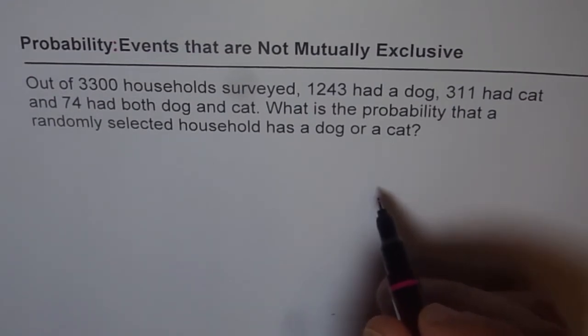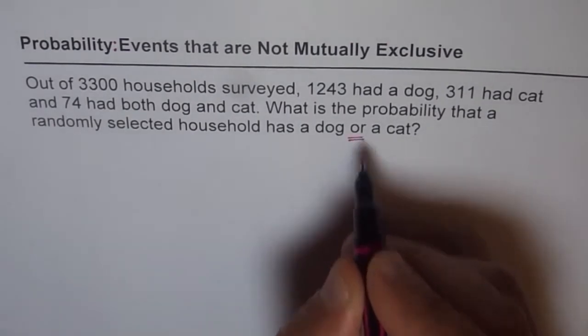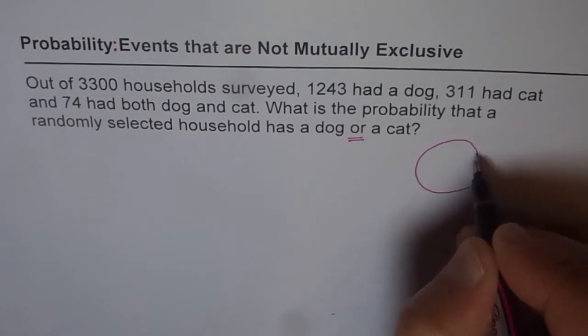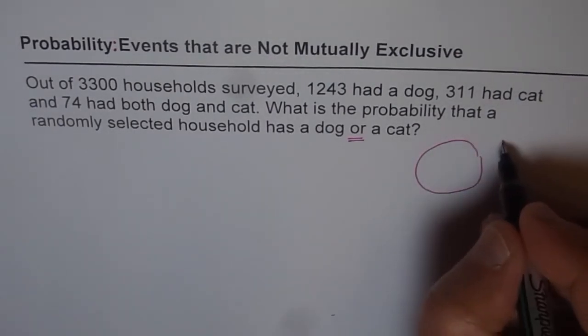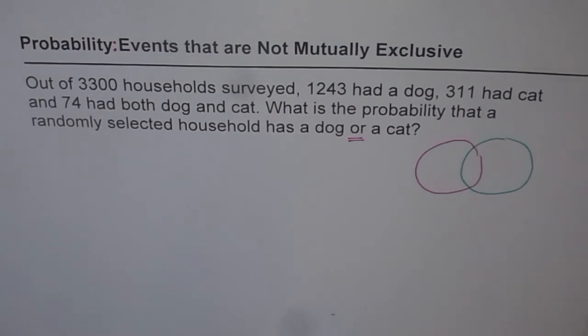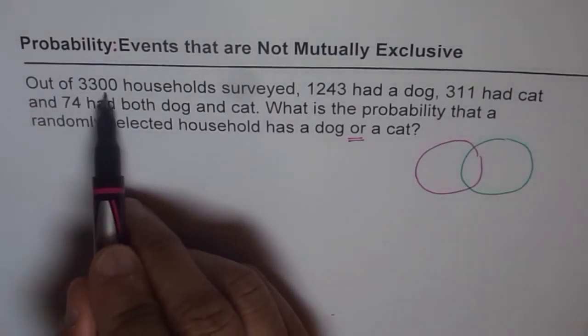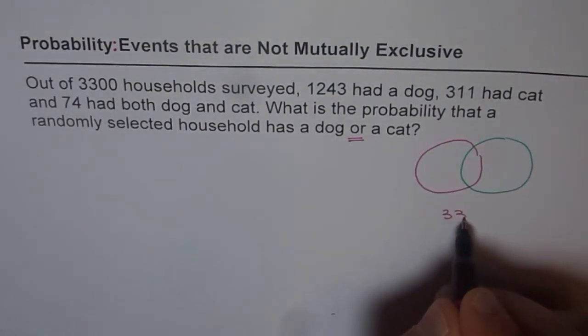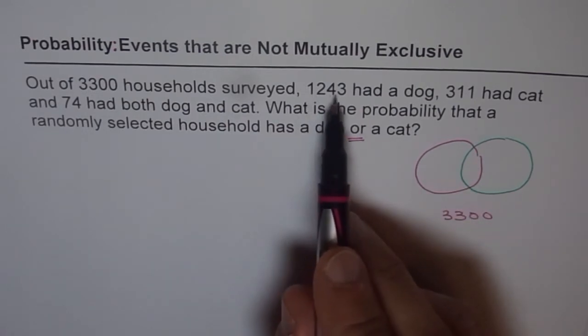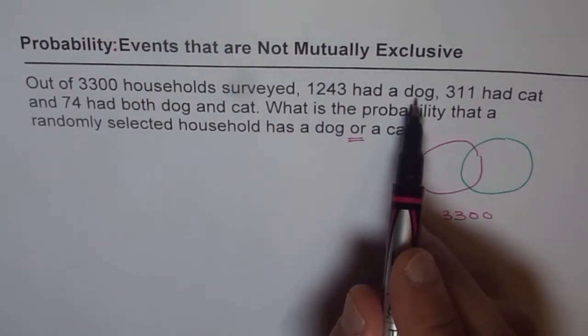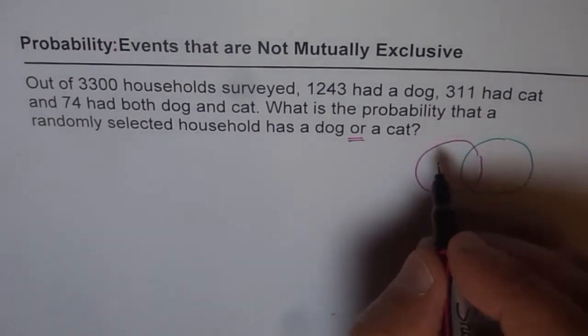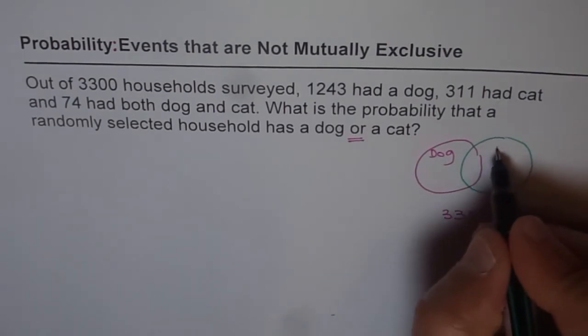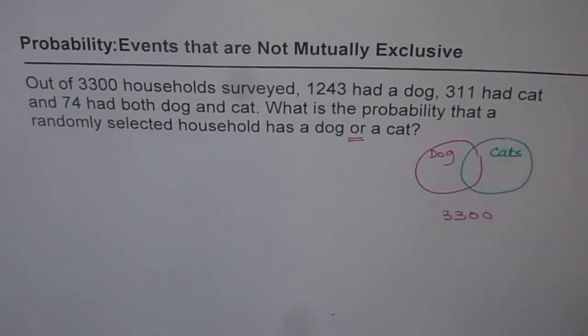What is the probability that a randomly selected household has a dog or a cat? So when we say or, what we are trying to do is let us make a Venn diagram, and then I will show you what we are trying to say here. Out of 3,300 households surveyed, so total households surveyed are 3,300. 1,243 had dog, 311 had cat. So let us say these are for dogs. How many households have dog? And then we have here households which have cat.